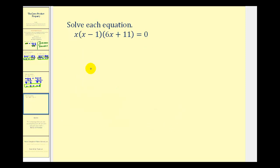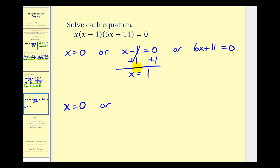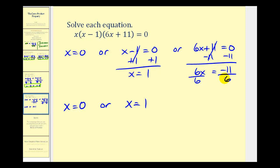In this equation we have three factors with a product of zero, so we'll have three solutions. Either x equals zero from the first factor, or x minus one equals zero from the second factor, or six x plus eleven equals zero from the third factor. The first equation is already solved: x equals zero. Adding one to both sides of the second gives x equals positive one. For the third, subtracting eleven and dividing by six gives x equals negative eleven sixths.